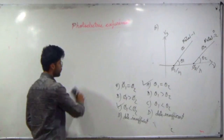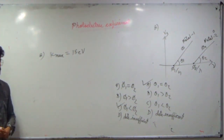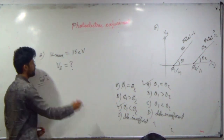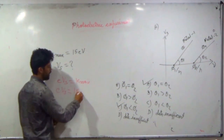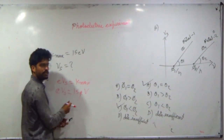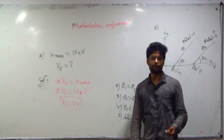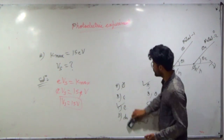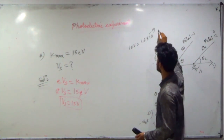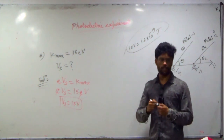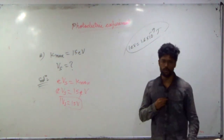Numerical example: if the maximum kinetic energy of a photoelectron is 1.5 electron volts, find the stopping potential. We know e times Vs equals K max, so e times Vs equals 1.5 eV. Since one electron volt equals 1.6 times 10 to the power minus 19 joules, and charge of electron is 1.6 times 10 to the power minus 19 coulombs, therefore stopping potential Vs equals 1.5 volts.